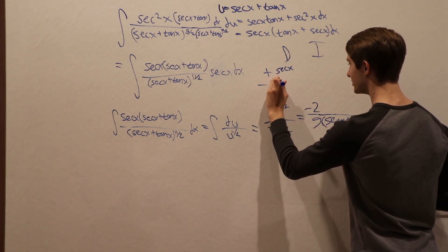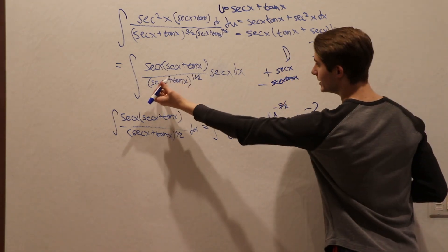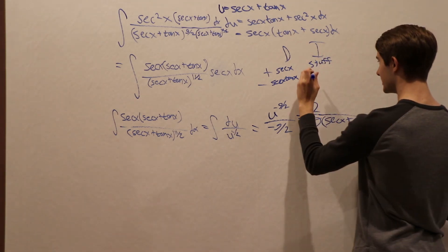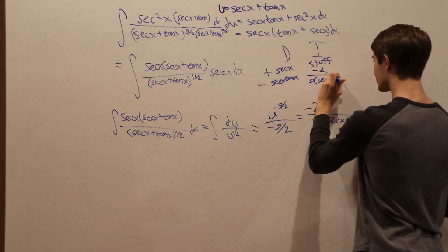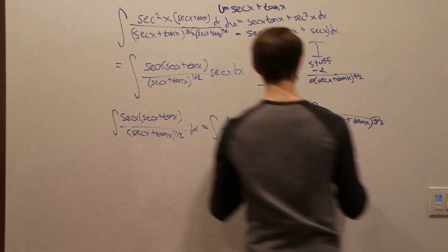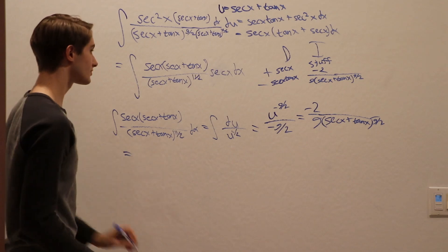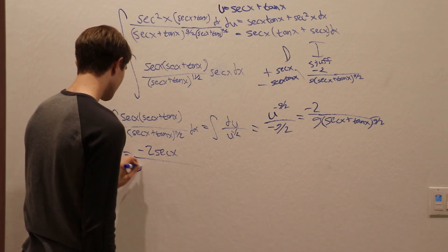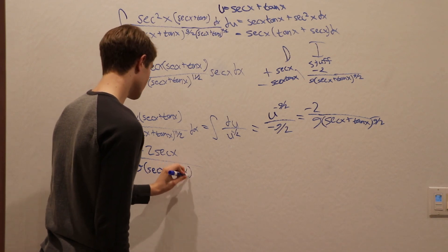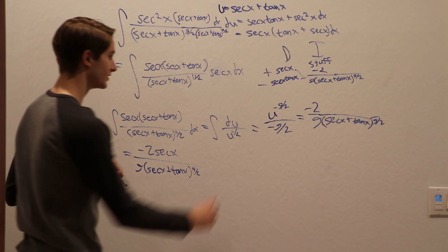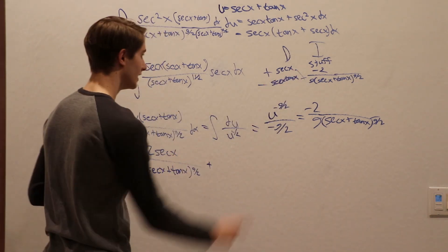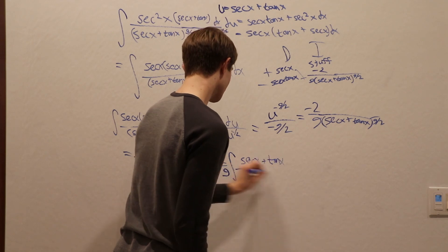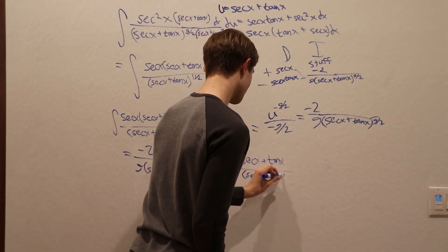The derivative of secant x is secant x tangent x. Applying the integration by parts formula, we get: negative 2 secant x over 9 times secant x plus tangent x to the 9 halves, and then — because we have a minus and a negative — plus 2 ninths times the integral of secant x tangent x divided by secant x plus tangent x to the 9 halves.